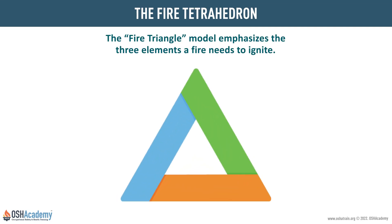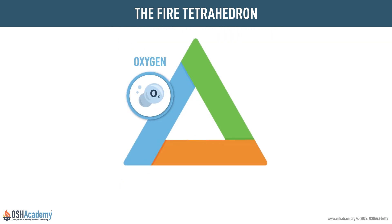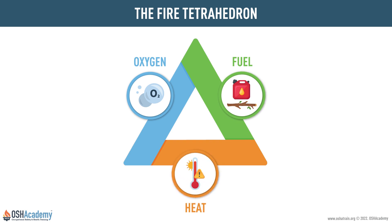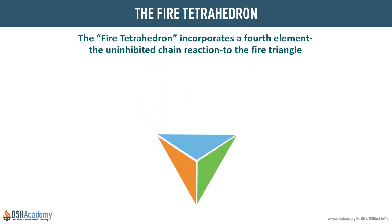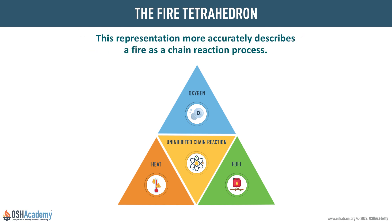The fire triangle model emphasizes the three elements fire needs to ignite: oxygen, fuel, and heat. The fire tetrahedron incorporates a fourth element — the uninhibited chain reaction — to the fire triangle. This representation more accurately describes a fire as a chain reaction process.